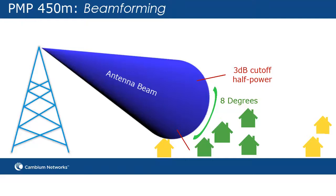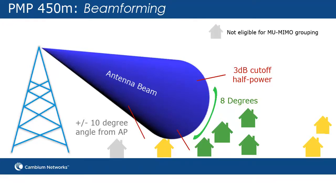Additionally, PMP450M was designed to utilize beamforming, a key characteristic of MU-MIMO, to maximize performance. The PMP450M antenna shapes and forms beams, optimizing the power across the azimuth of the sector, as subscriber modules tend to be spread out over the 90 degrees in azimuth, but only a few degrees in elevation. Ensuring the AP is set correctly will optimize performance and ensure all subscriber modules benefit from MU-MIMO.